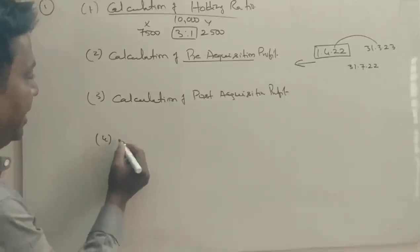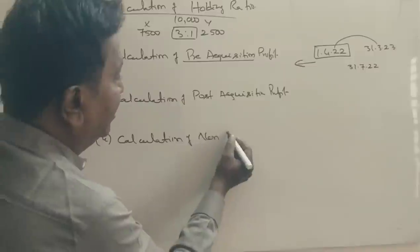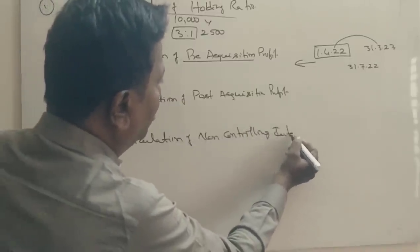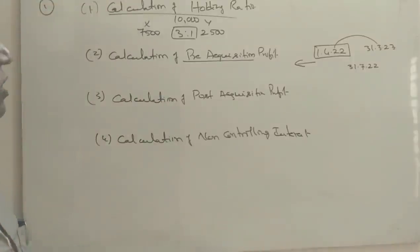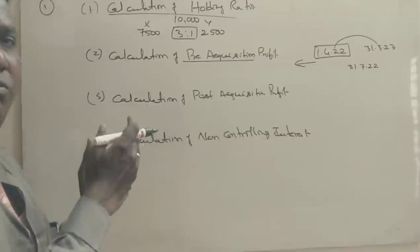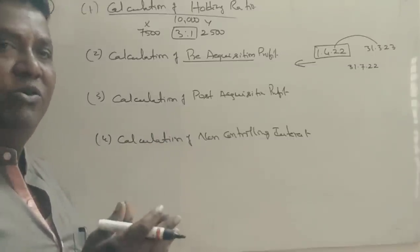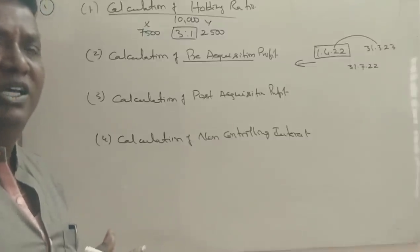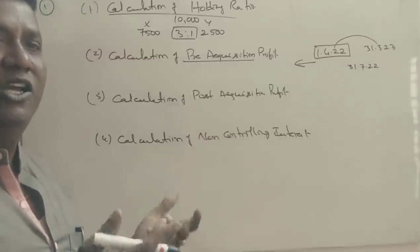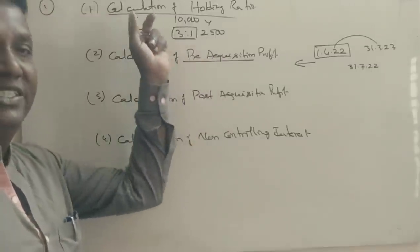The 4th point is the calculation of Non-Controlling Interest. Why is it non-controlling interest? Once X company acquires the majority shares of Y company in the sale market, Y company is under 100% controlling power. The remaining minority shareholders hold non-controlling interest.